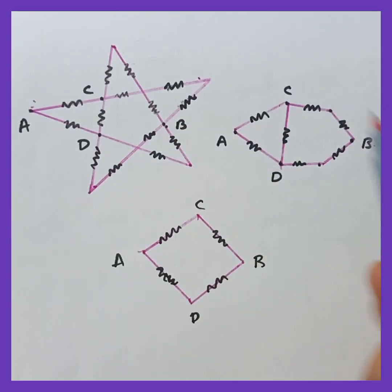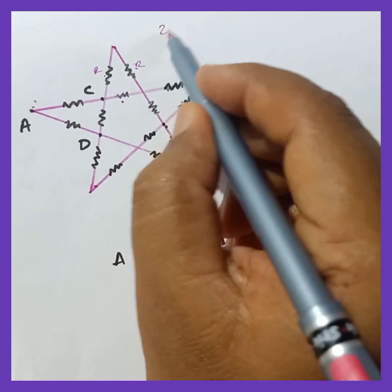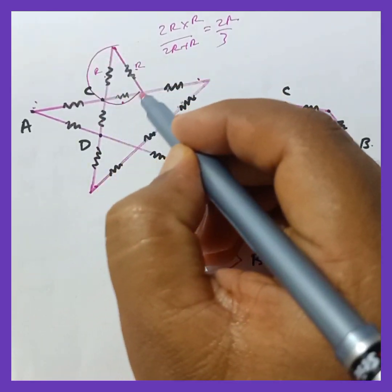First thing is this is A and B. I am drawing A and B here. And you should know one thing here that these two resistances are R and R. They are parallel to this one. Therefore you can write 2R into R by 2R plus R which is going to be 2R by 3. So this completely it is going to be 2R by 3.